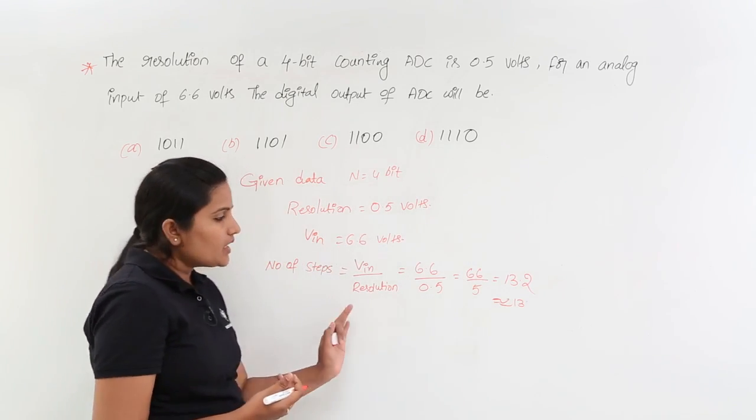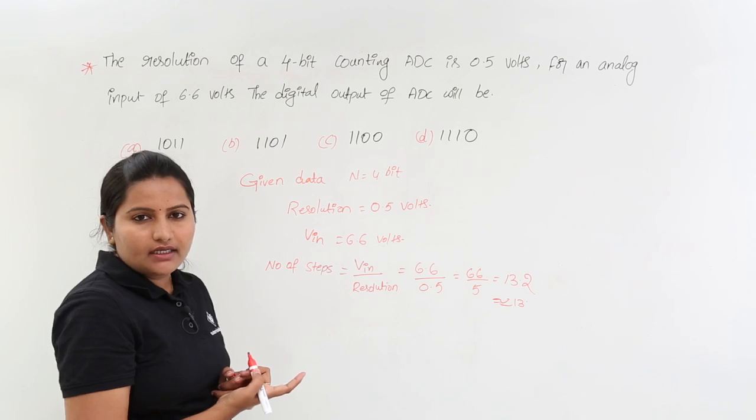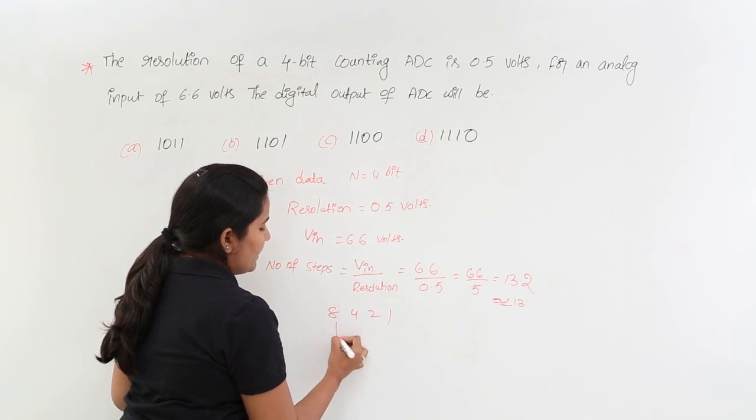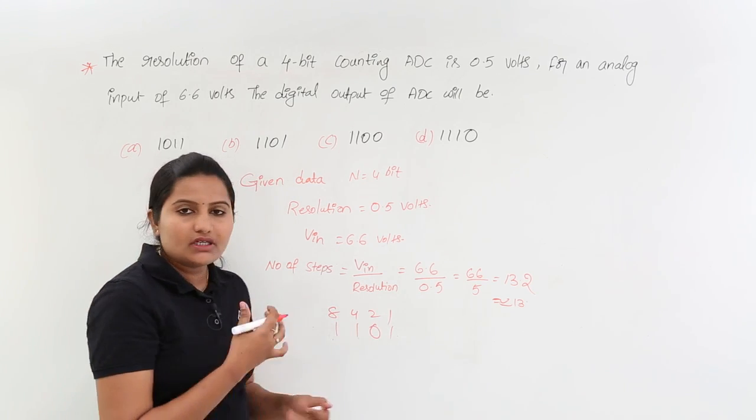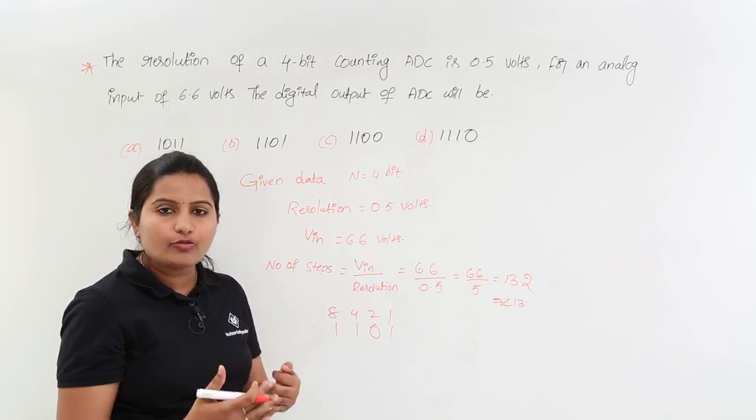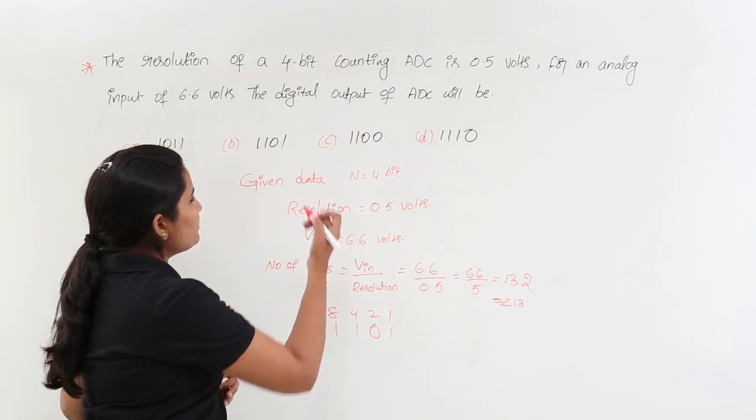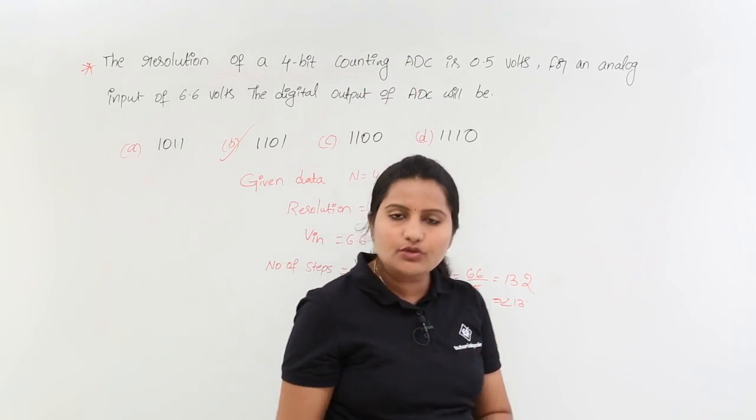I took like 13, and here 13 means the digital equivalent of 13. 13 means 8421 code—you can take 8 plus 4 is 12, plus 1 is 13. So 1101 will be your digital output of this ADC with these specifications. That means B may be your answer. B is your answer.